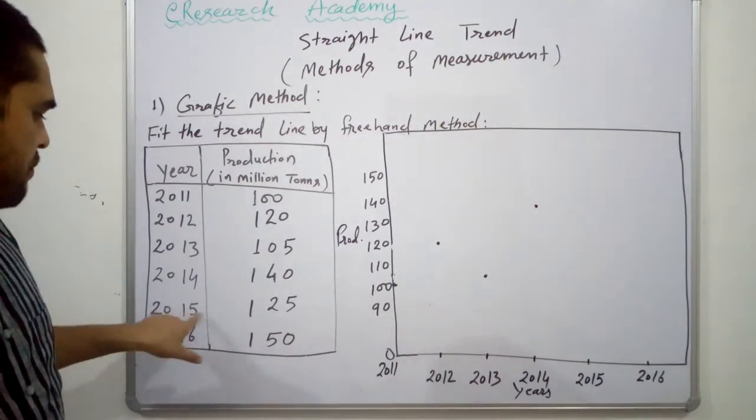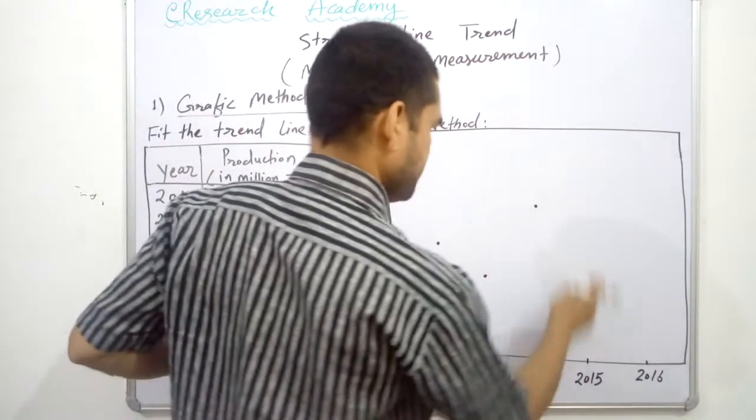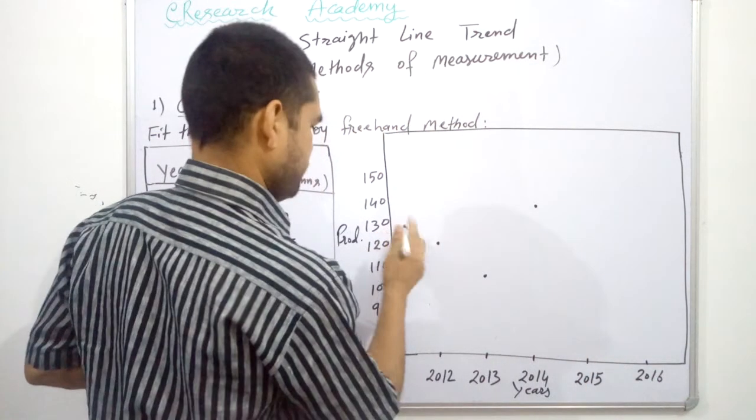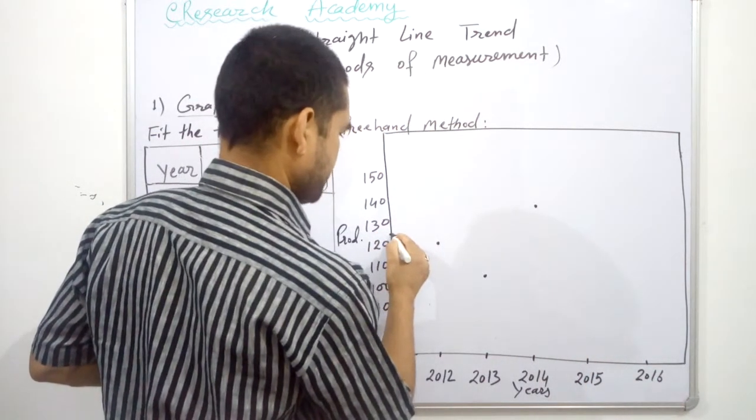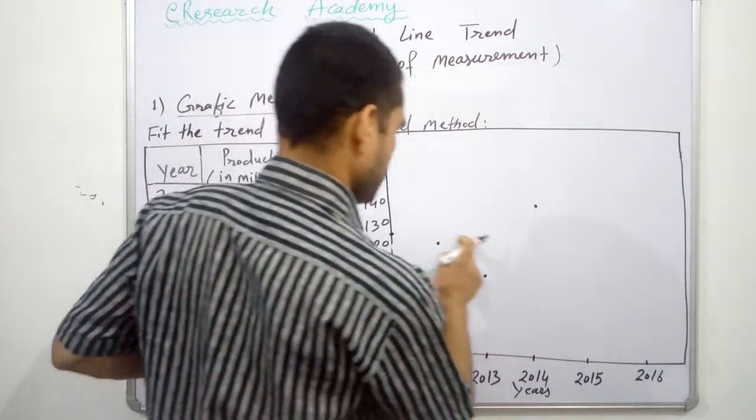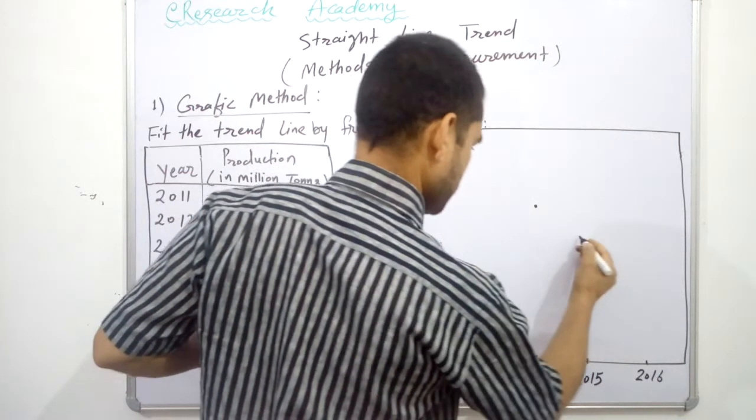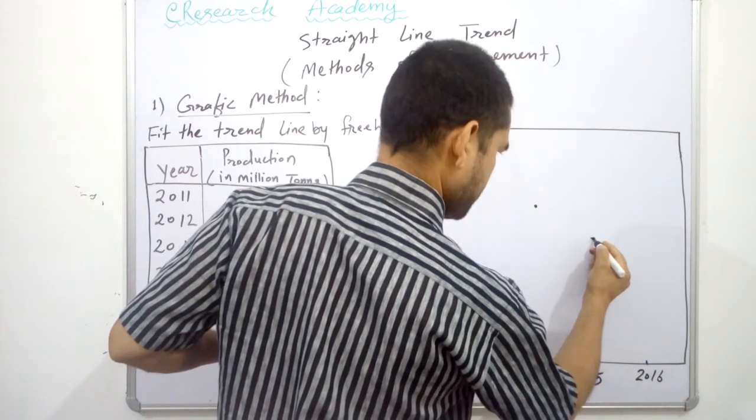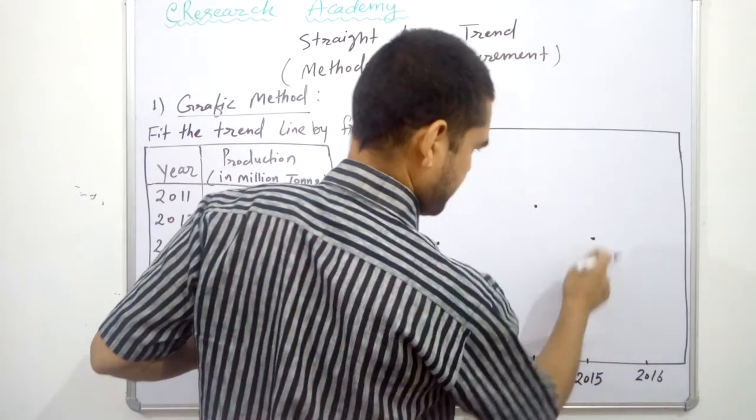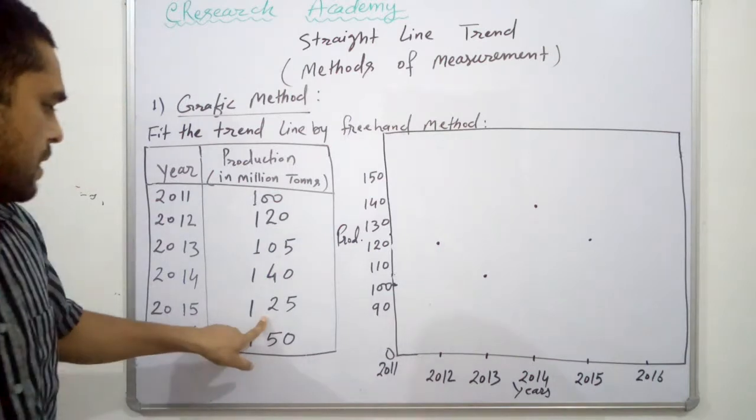In front of 140, and in 2015 we have to mark 125. So this is about 125 in between 130 and 120, 2015. This point, 2015, right.